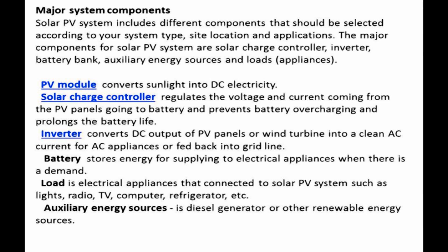A solar PV system includes different components that should be selected according to your system type, site location, and applications. The major components of a solar PV system are: solar panels, charge controller, inverter, battery bank, auxiliary energy sources, and loads or appliances. The PV module converts sunlight into DC electricity.